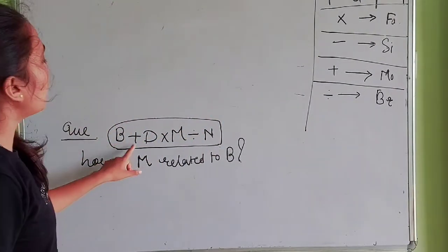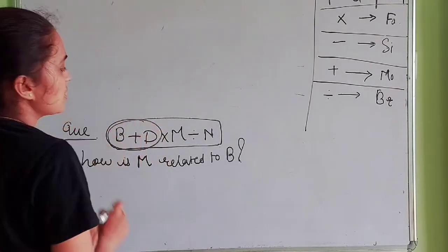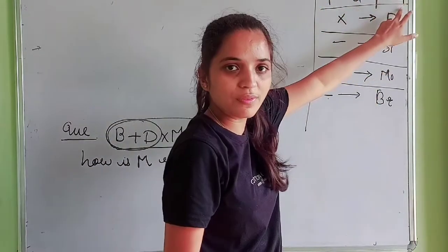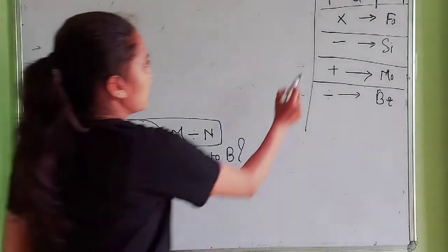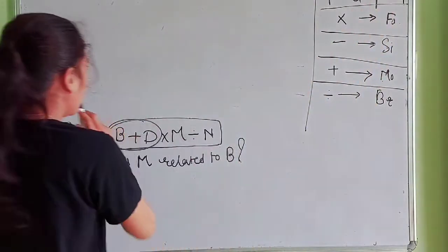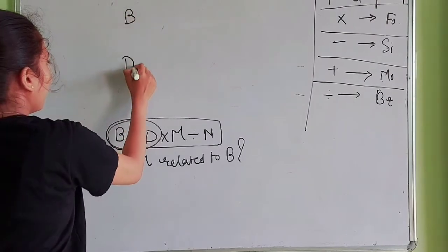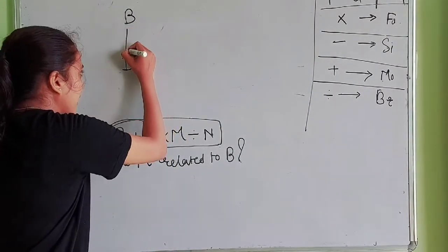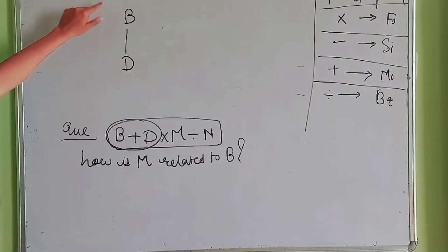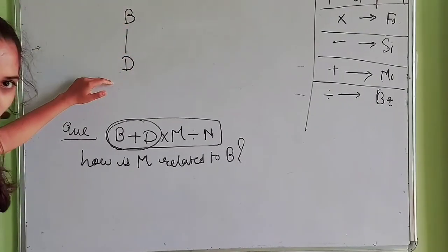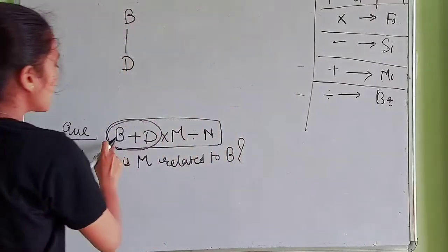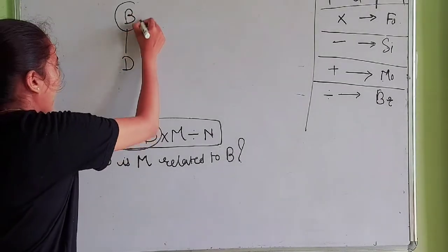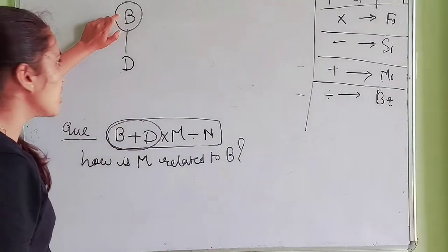Now the question says B + D. P + Q says P is mother of Q, so B + D means B is mother of D. Mother-children relationship is shown by a vertical line, so I am putting a vertical line between B and D. B is mother of D, so B must be a female — I am circling B. We don't know the gender of D yet, so I am not putting any symbol in front of D.